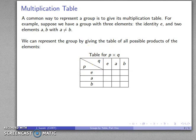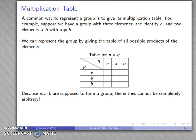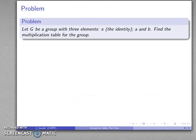It's important to keep in mind that groups are not in general commutative — the group operation is not going to be commutative — so we have to read our table carefully. This table represents P times Q, where the first factor is specified by the row and the second factor by the column. Because E, A, and B are supposed to form a group with identity E, the entries in this table can't be completely arbitrary. Let G be a group with three elements E, A, and B, and let's produce a multiplication table.